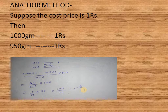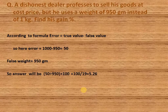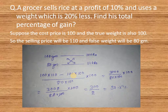In this case we can use either this method or the formula to calculate the percentage of gain. Now let us take another example: a grocer sells rice at a profit of 10 percent and uses a weight which is 20 percent less. Find his total percentage of gain.